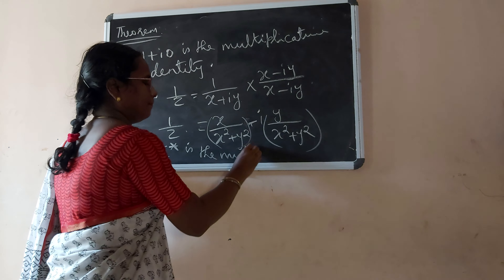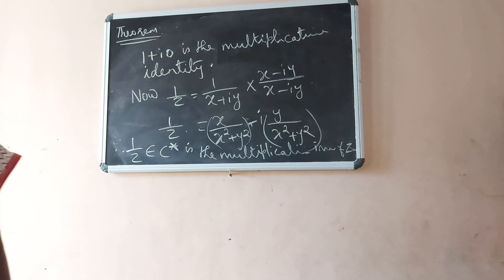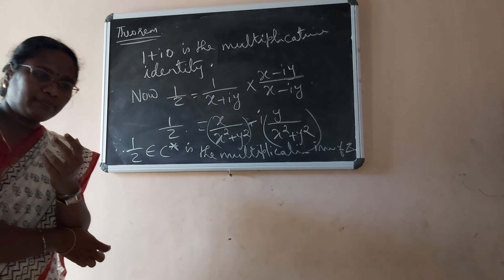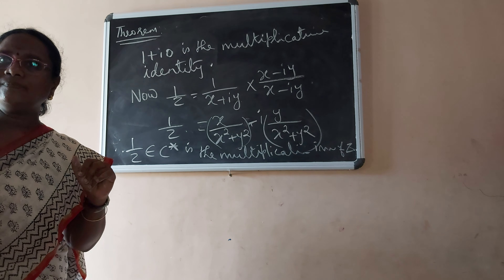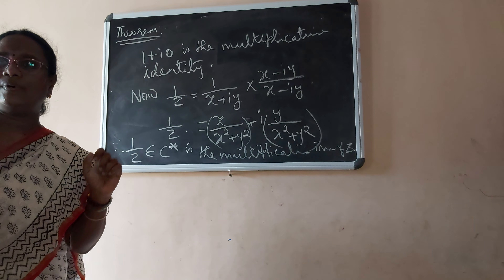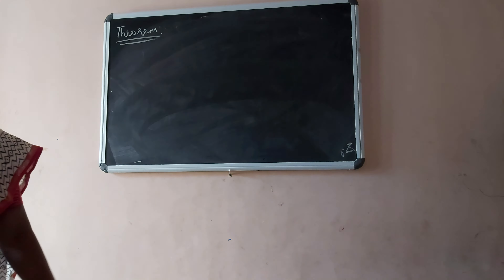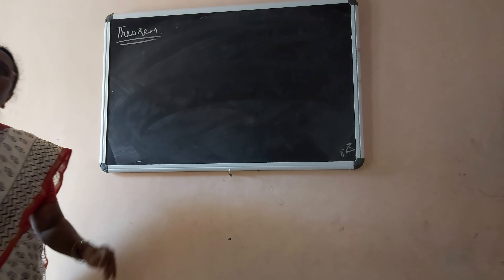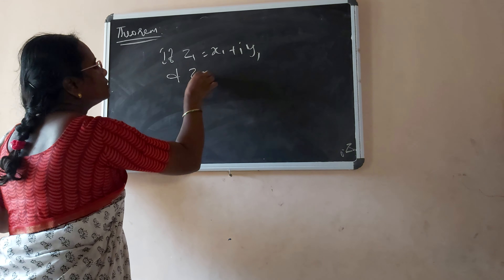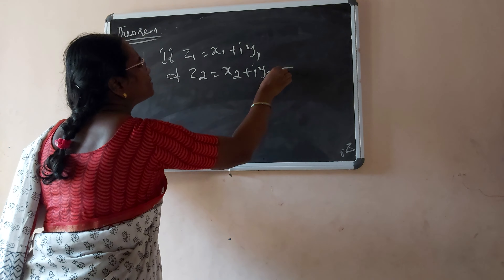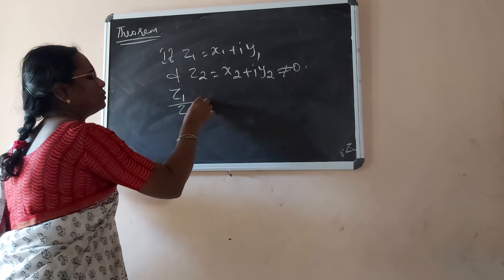Now we have to find the multiplicative inverse of Z. We have 1 by Z is equal to 1 by (X plus iY). Multiplying and dividing by X minus iY, we get X divided by (X squared plus Y squared) minus iY divided by (X squared plus Y squared). So 1 by Z belongs to C star and is the multiplicative inverse of Z.